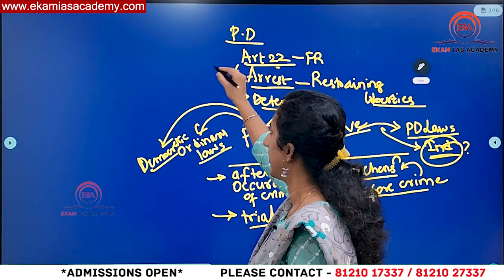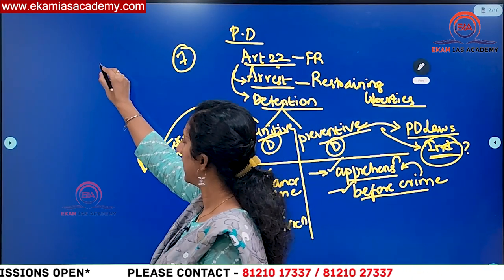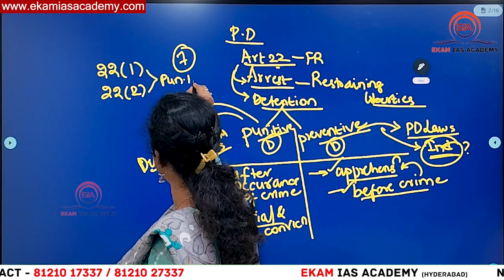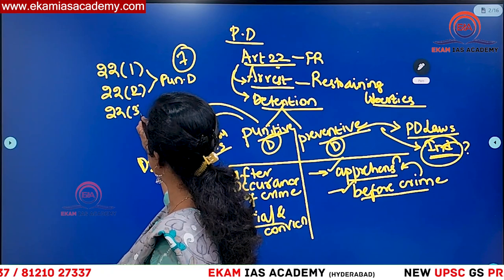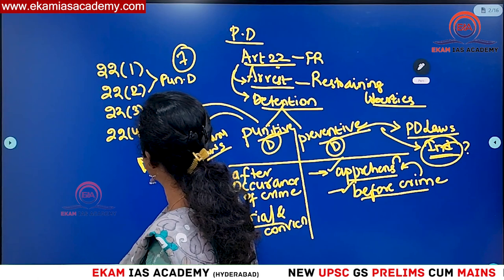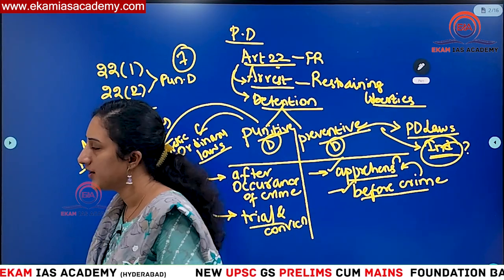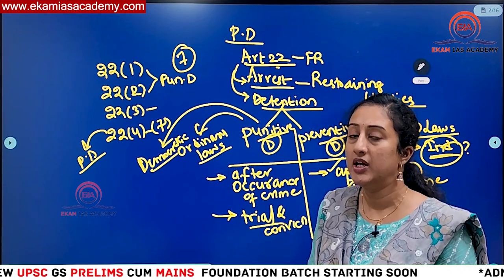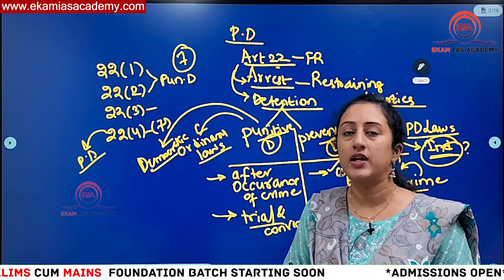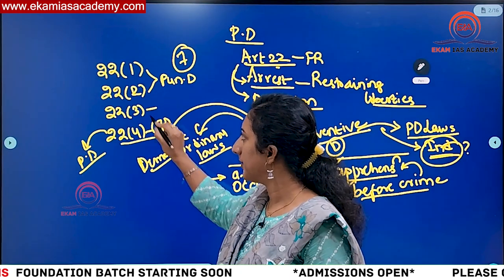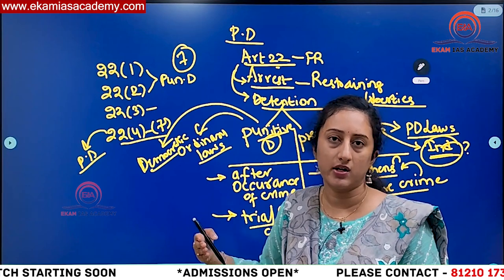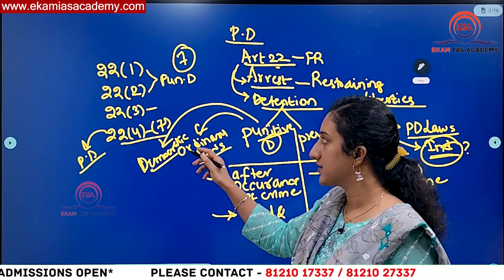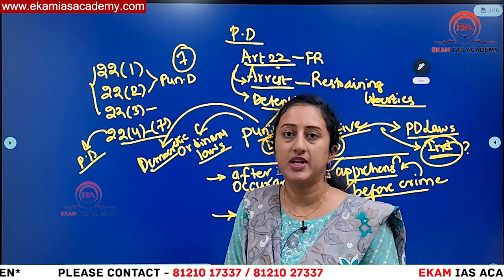Under Article 22 we have seven clauses. Clauses 1 and 2 deal with punitive detention. Clause 3 deals with exceptions. Clauses 4 to 7 deal with preventive detention. Under Article 21, every citizen or even a foreigner has the right to life and personal liberty. But in some situations — in case of crime or apprehension of crime — you can detain them under punitive or preventive detention, taking away personal liberty guaranteed under Article 21. These things cannot happen arbitrarily, so some safeguards are provided as fundamental rights.